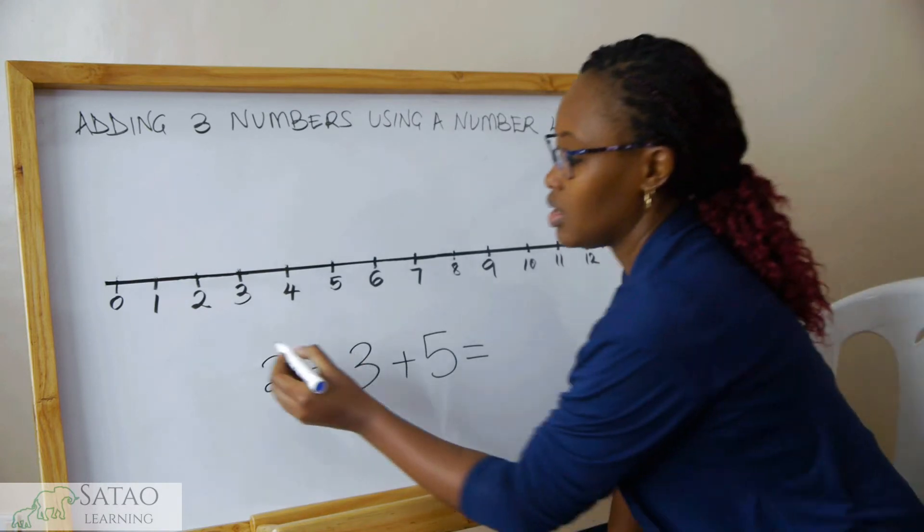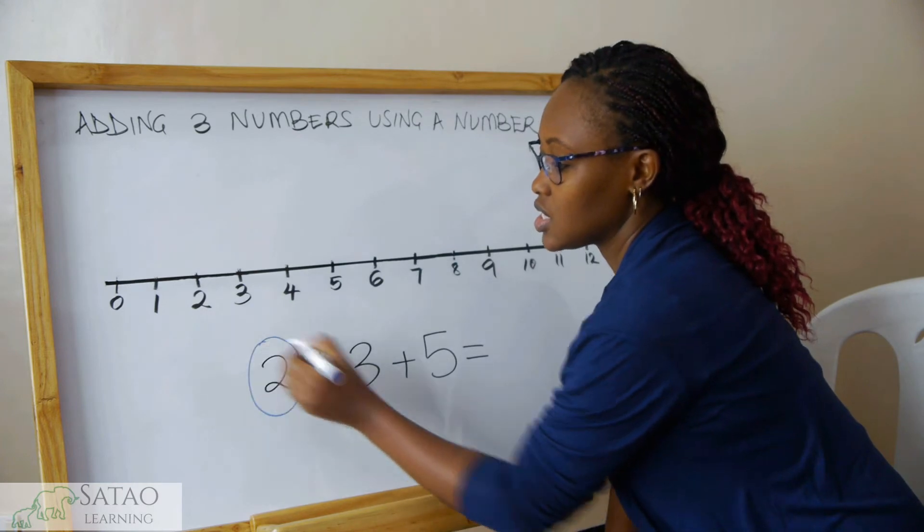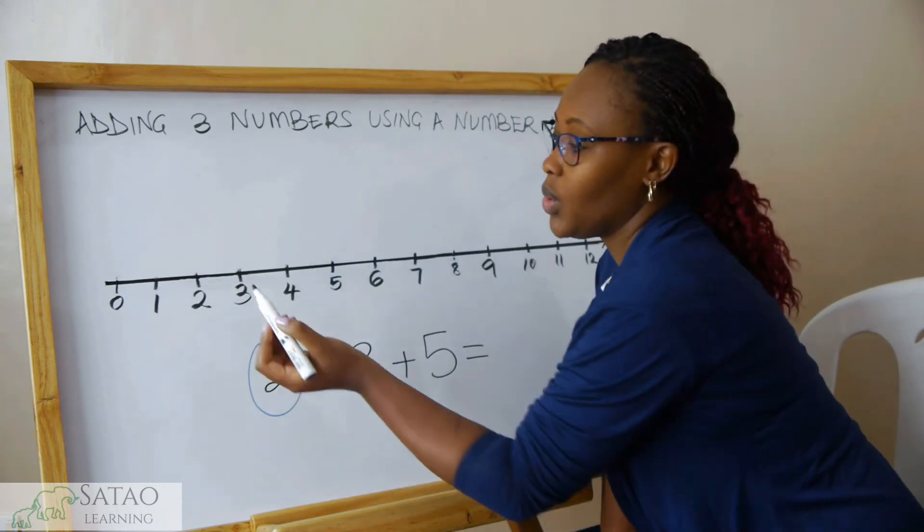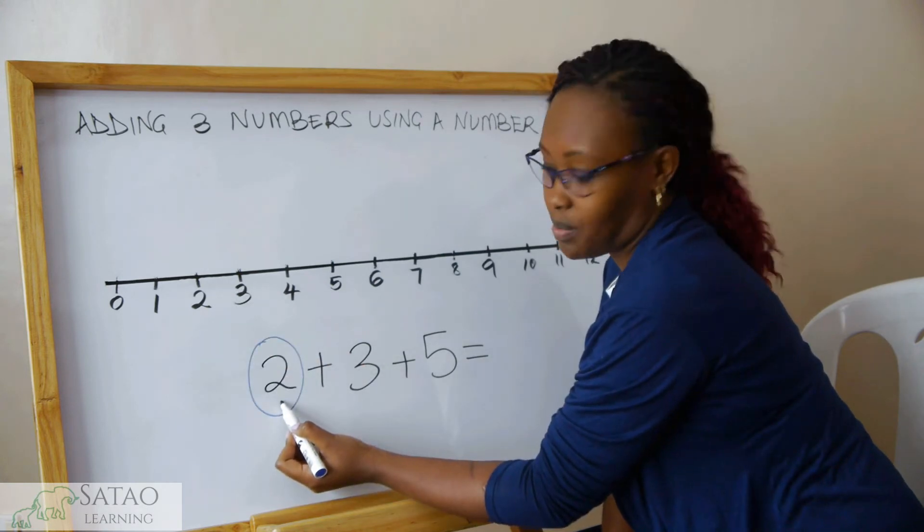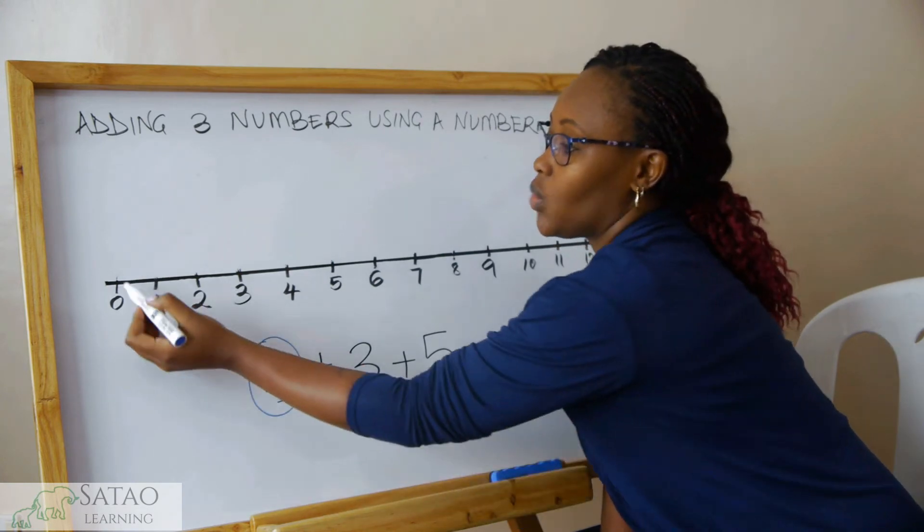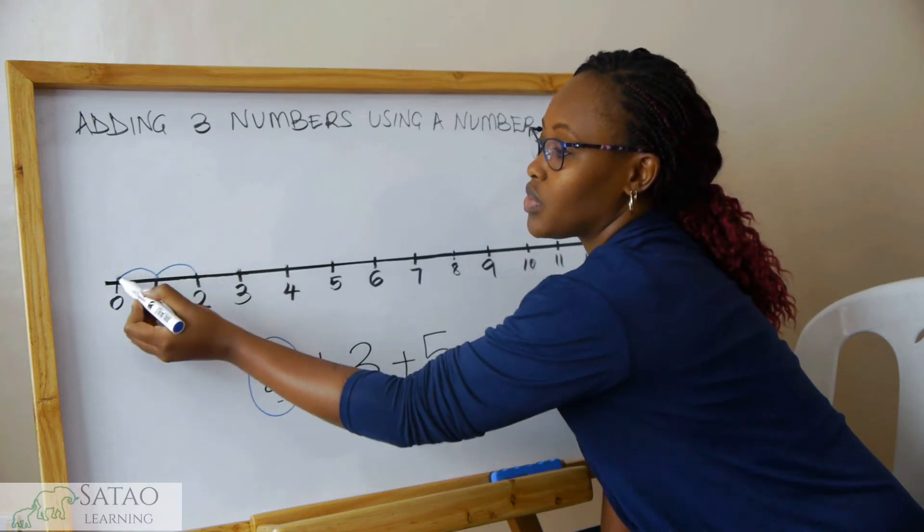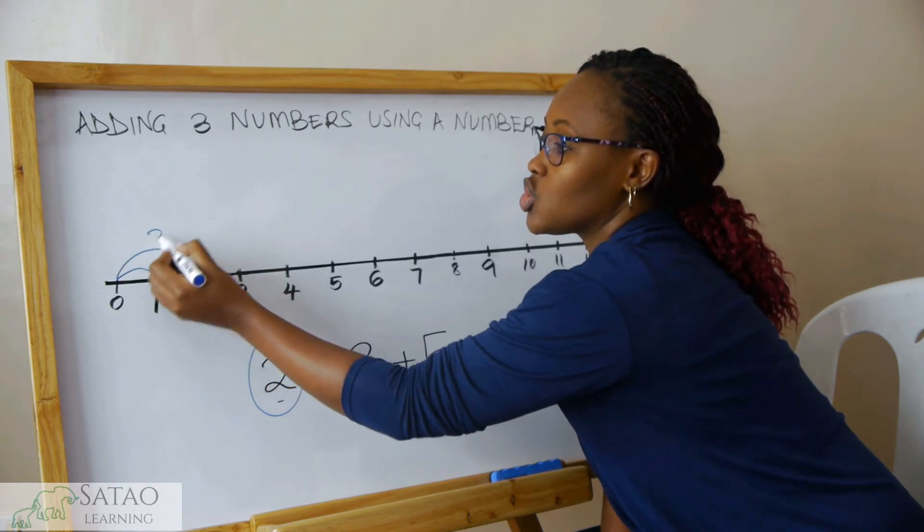We start with our first number, which in this case is 2. We start from zero and skip two steps - that's what this 2 means. We skip two steps: one, two. Then we write 2 there.